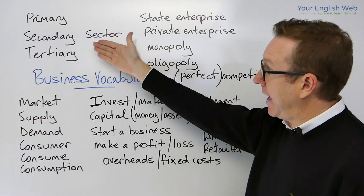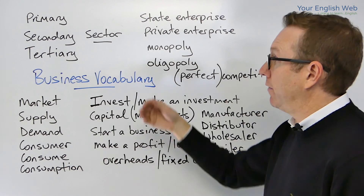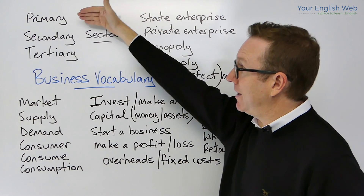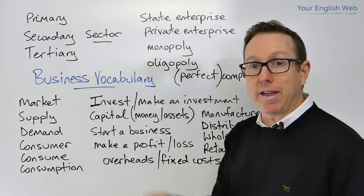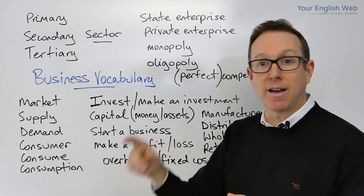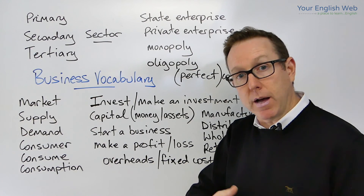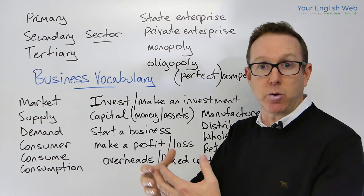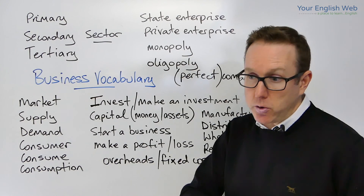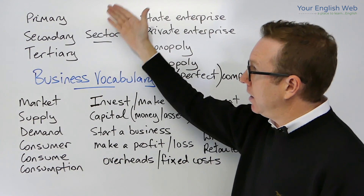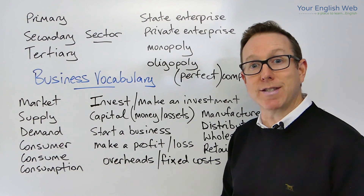We're going to start by looking at the economy and the sectors it is divided into. We normally divide the economy into primary, secondary, and tertiary sectors. The primary sector covers raw materials — agriculture, fishing, mining, etc. The secondary sector is the industry that takes those raw materials and turns them into a sellable product. The tertiary sector is the services sector, where those goods come into the market.